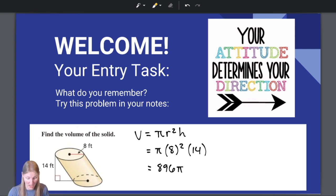So that would be our exact answer. But if we want an approximation, I don't know what 896 pi means. So if we want an approximate answer, 2814.867, I do know what 2800 looks like. 896 pi, a little bit more difficult.